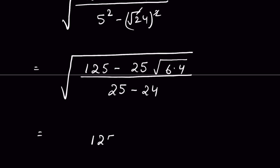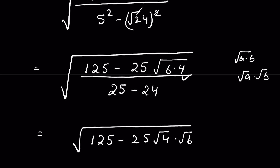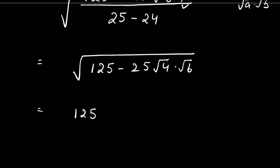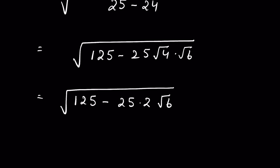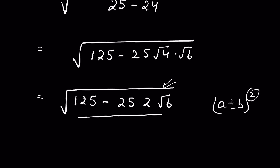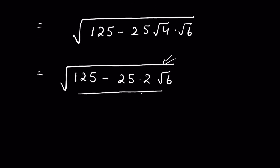We now have 125 minus 25 square root of 24, all under square root. We can write square root of 24 as 2 times square root of 6, so the expression becomes square root of (125 minus 50 square root of 6). To further simplify, we need to remove the outer square root by writing the expression inside in the form of (a plus or minus b) whole squared, since squaring will cancel the square root.